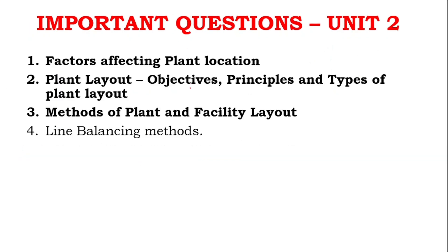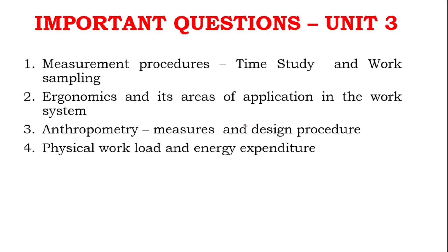For unit two, there are about four questions but three are more than enough to cover. Line balancing methods is one question. Factors affecting plant location is another. Plant layout is very very important — principles and types of plant layout are confirmed. Methods of plant and facility layout is the third question. The fourth question is line balancing methods. These three to four questions cover unit two well.